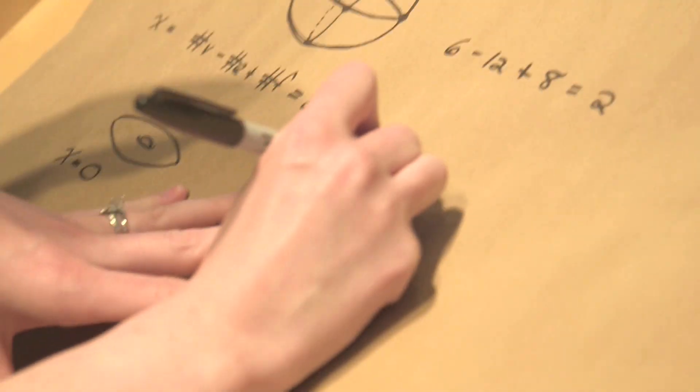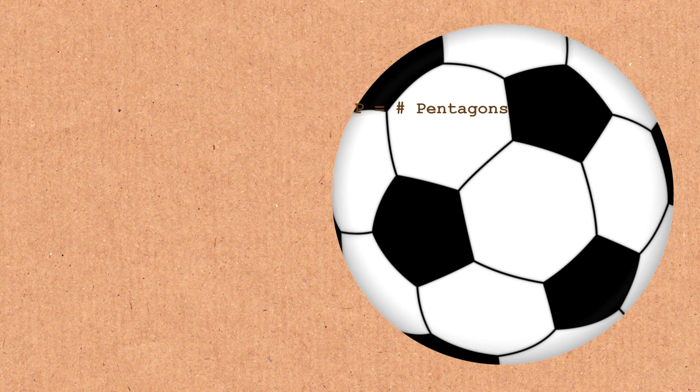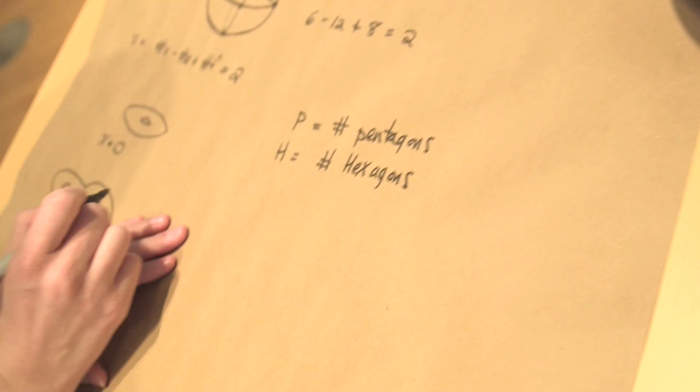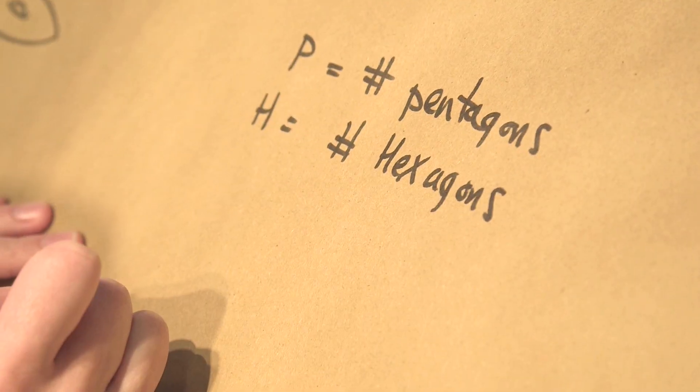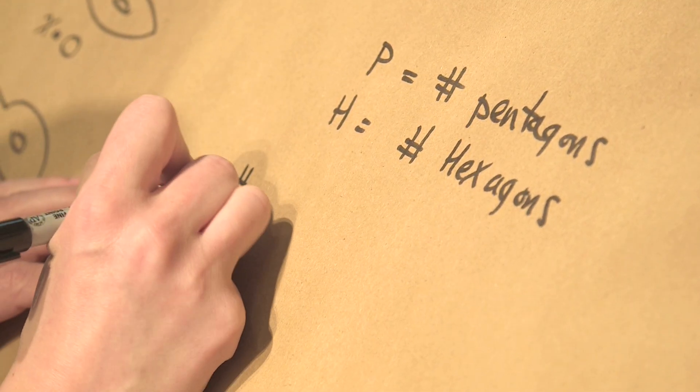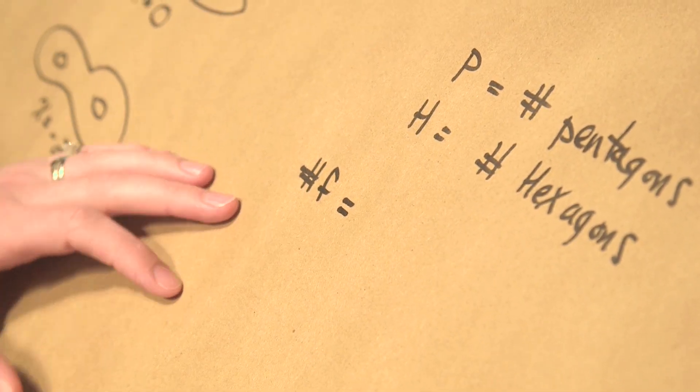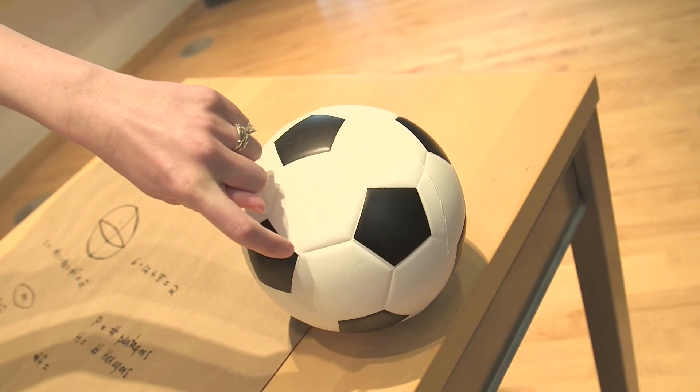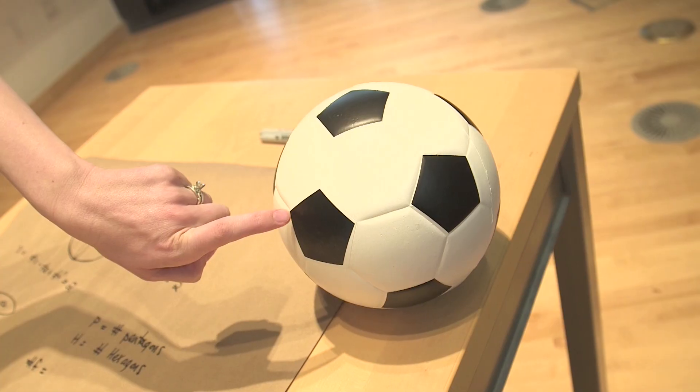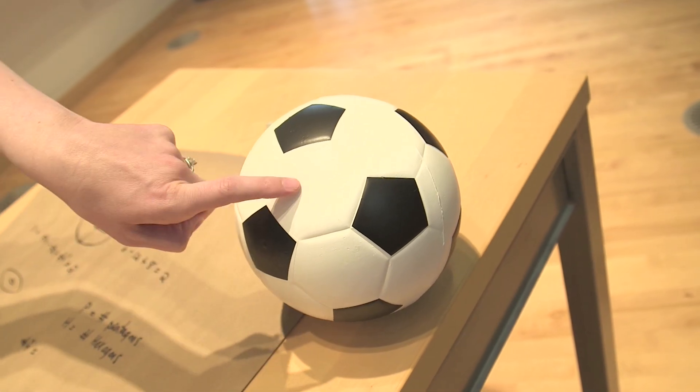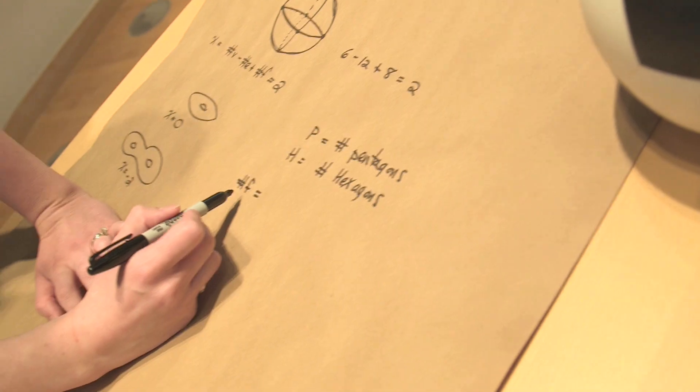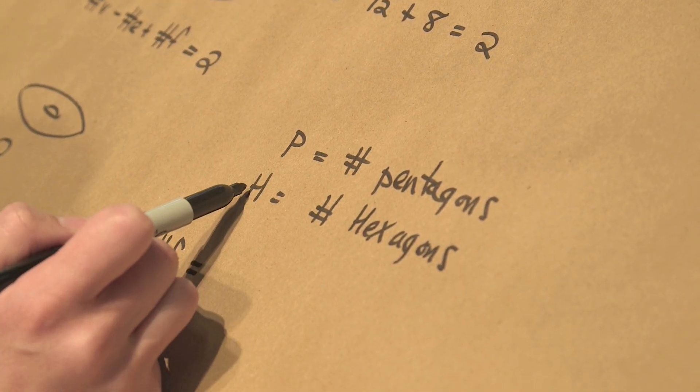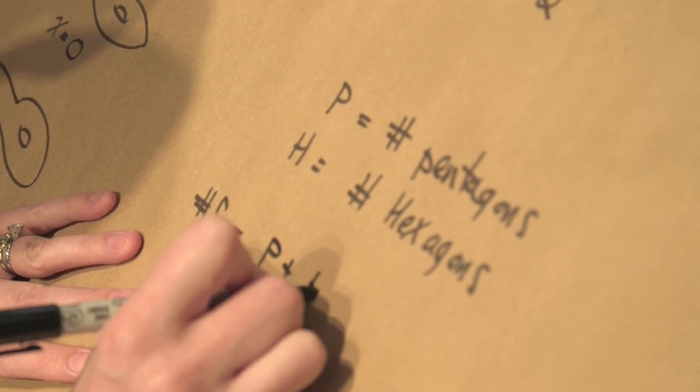So let's say that P is going to be the number of pentagons on a soccer ball and H is the number of hexagons. The way we're going to do it is using the Euler characteristic, which means we need to count vertices, edges, and faces. Let's count faces because that one's the easiest. So the way I'm thinking about this is that we're dividing it up using these edges that are naturally on the soccer ball. And the vertices are like these points where the edges come together. And the faces are the individual pieces. How many faces are there? Well, if there are P pentagons and H hexagons, the number of faces is just P plus H.